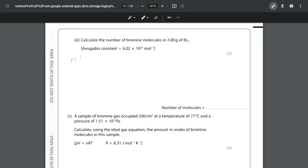Our number of moles of bromine is going to be the mass over the Mr, and that is going to be a mass of 2 divided by an Mr of 160. We can get the Mr from the periodic table.